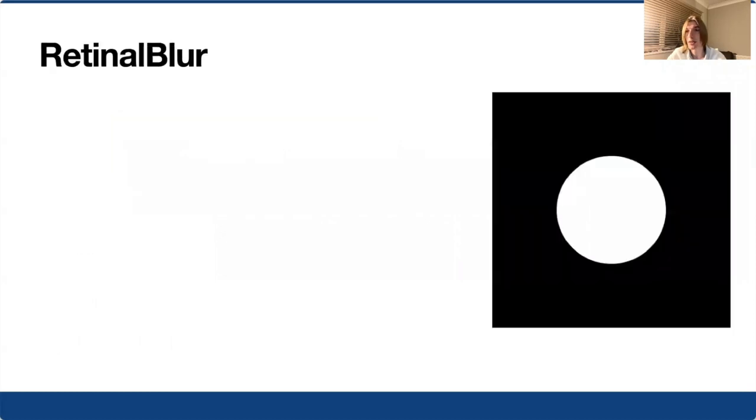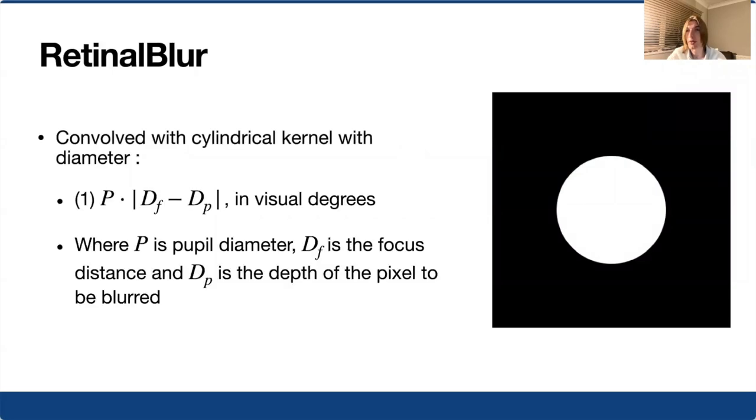In the retinal blur condition, out of focus content is convolved with a cylindrical kernel, the diameter of which is given in equation one. This should reproduce close to physically accurate defocus blur without attempting to reproduce other focus cues, such as chromatic aberration. In this condition, we do not account for focus cues encountered from viewing the content on a display, although we expect these to be fairly minimal due to observers being fixated on the display when viewing our content.